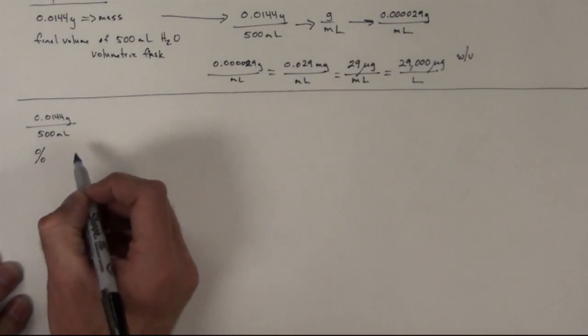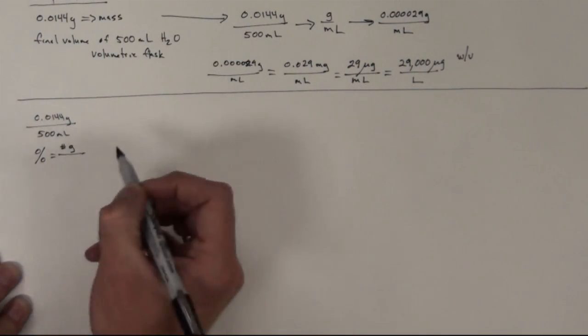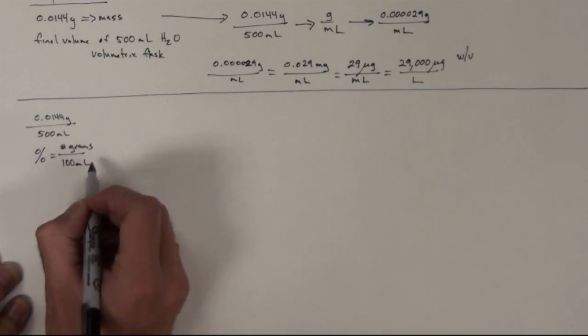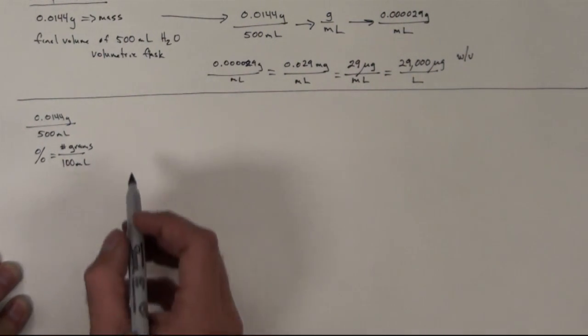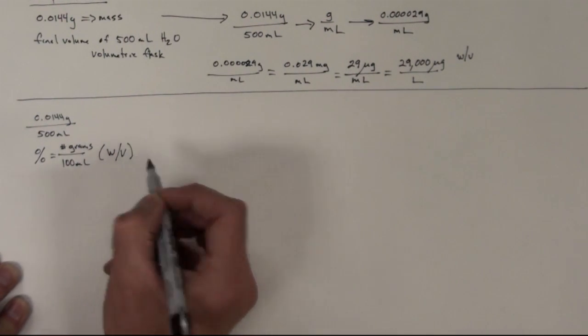And percentage in the laboratory is equal to number of grams per 100 milliliters. This would be an example of what we call a weight volume percentage.